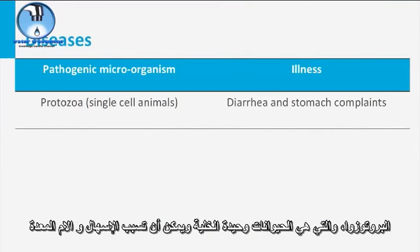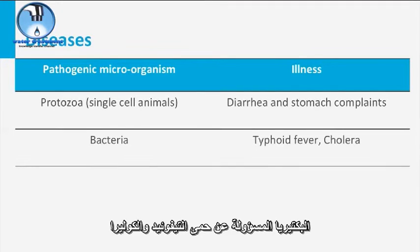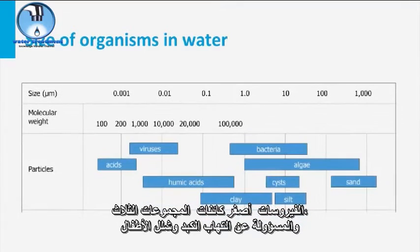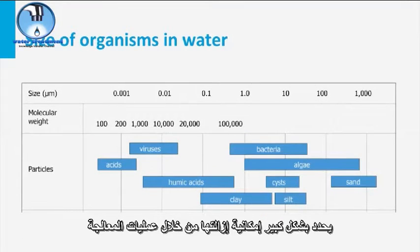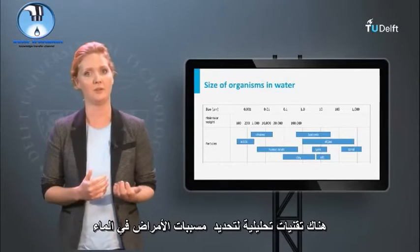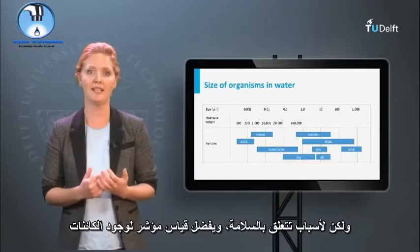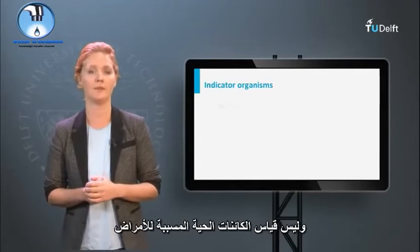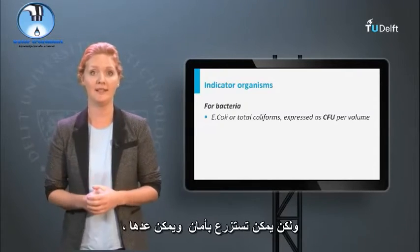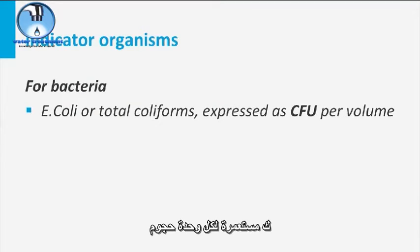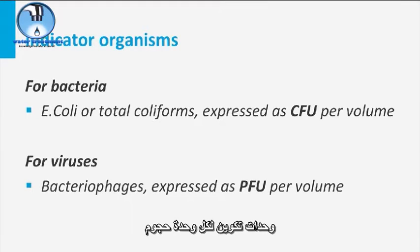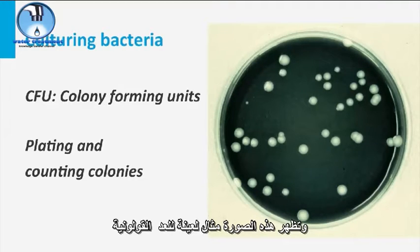Protozoa are single-cell animals and can cause diarrhea and stomach complaints. Bacteria are responsible for typhoid fever and cholera. Viruses are the smallest of the three groups and are responsible for hepatitis and polio. The size of bacteria, viruses, and different particulate matter in water determines to a great extent their removal potential by treatment processes. For safety reasons, it is preferred to measure indicator organisms rather than the real disease-causing organisms. For bacteria, coliforms or E. coli are used as indicator organisms, which can be more safely cultured and counted as colony-forming units per volume. For virus indicators, mostly bacterial phages are used, which form plaque-forming units per volume. This picture shows an example of a plated sample for E. coli counts, where each dot represents a colony-forming unit.